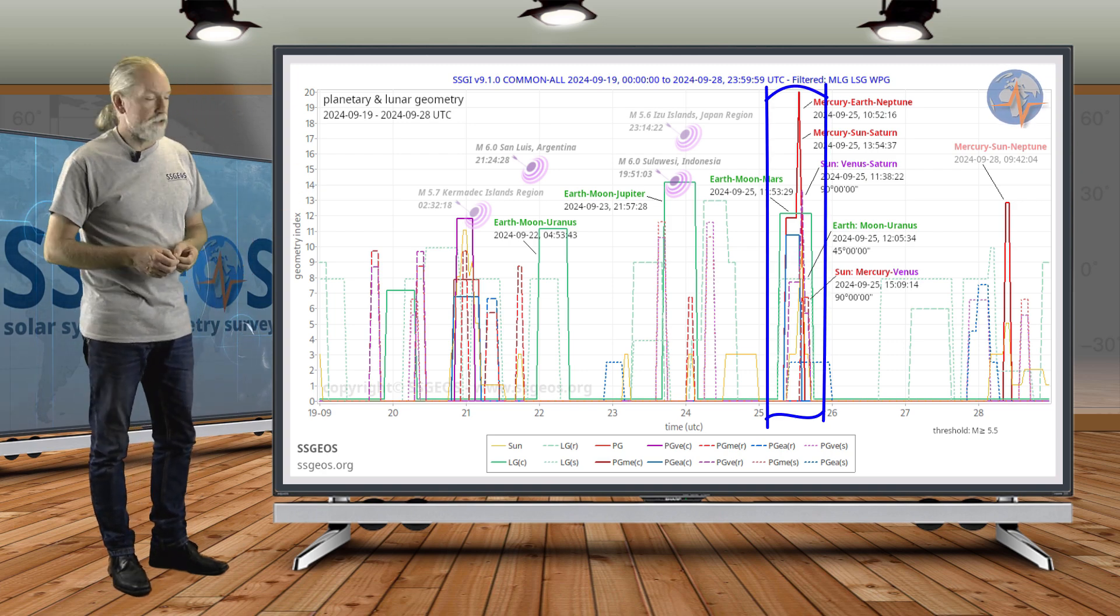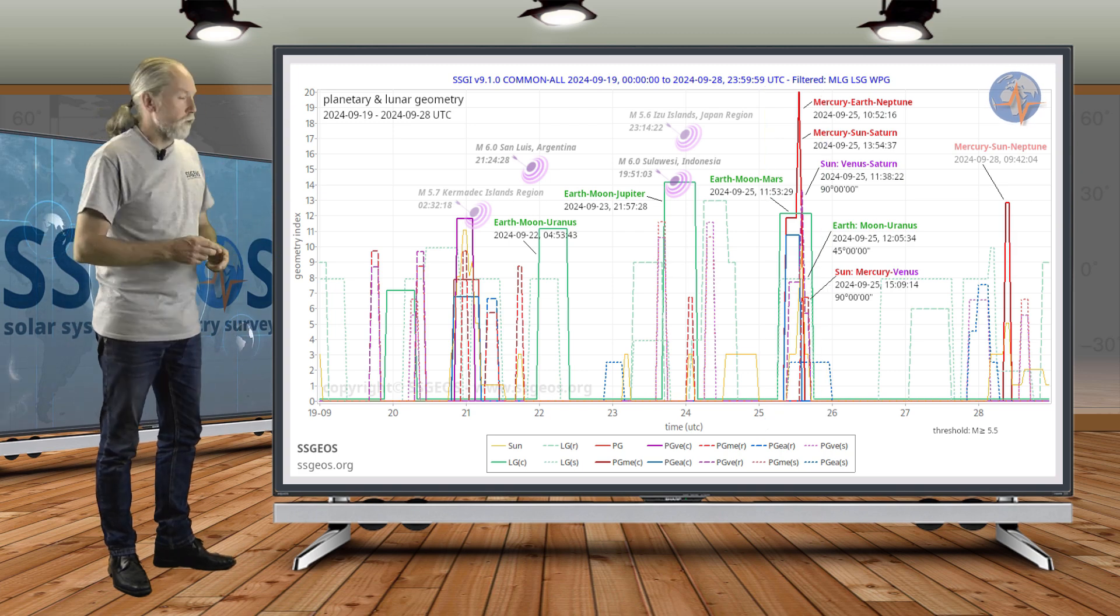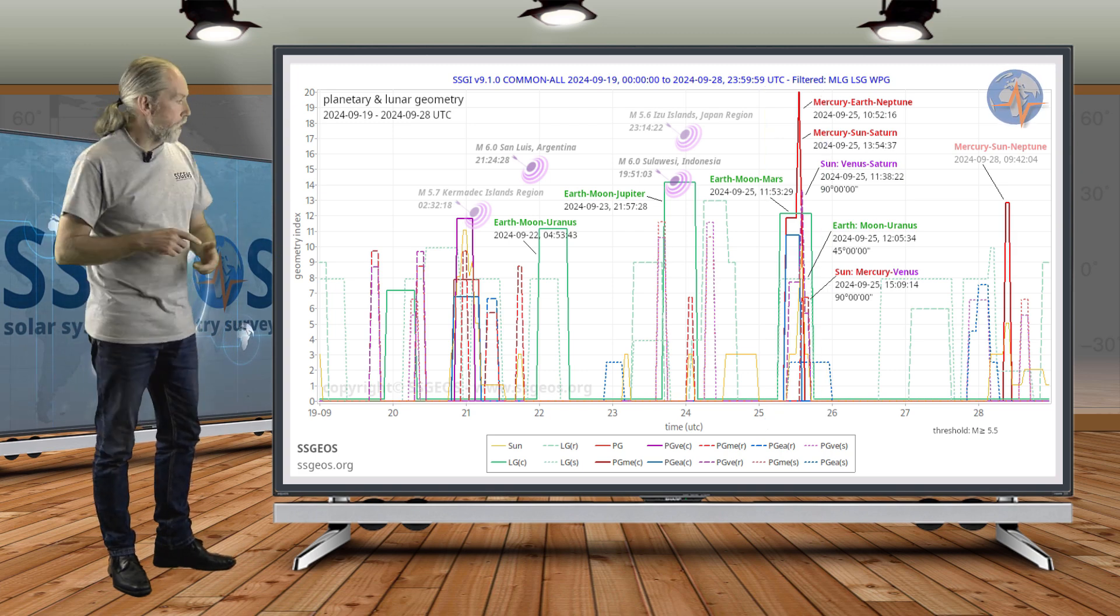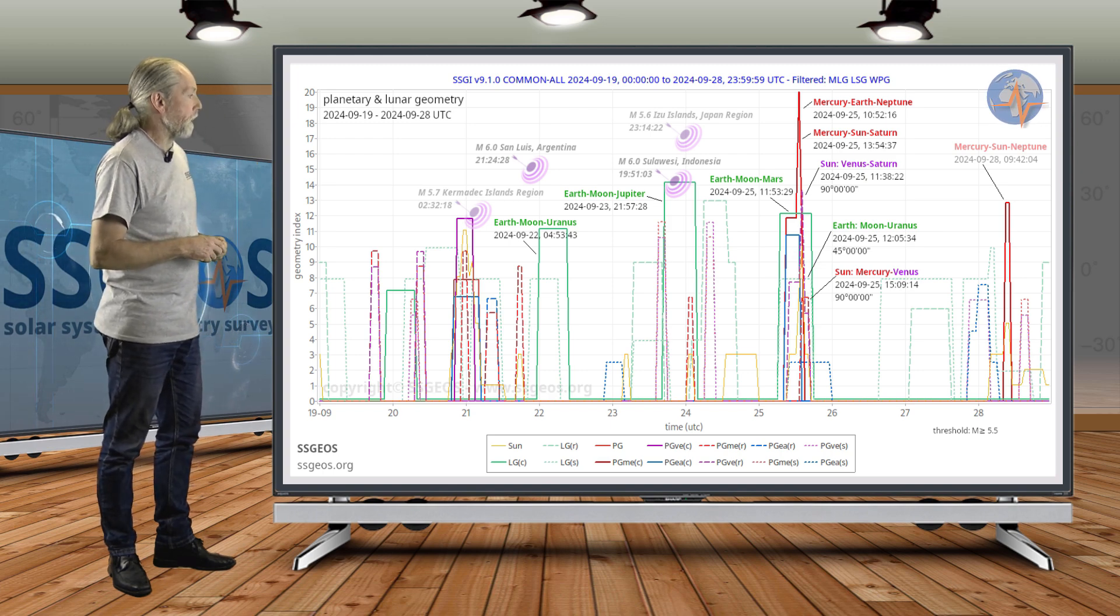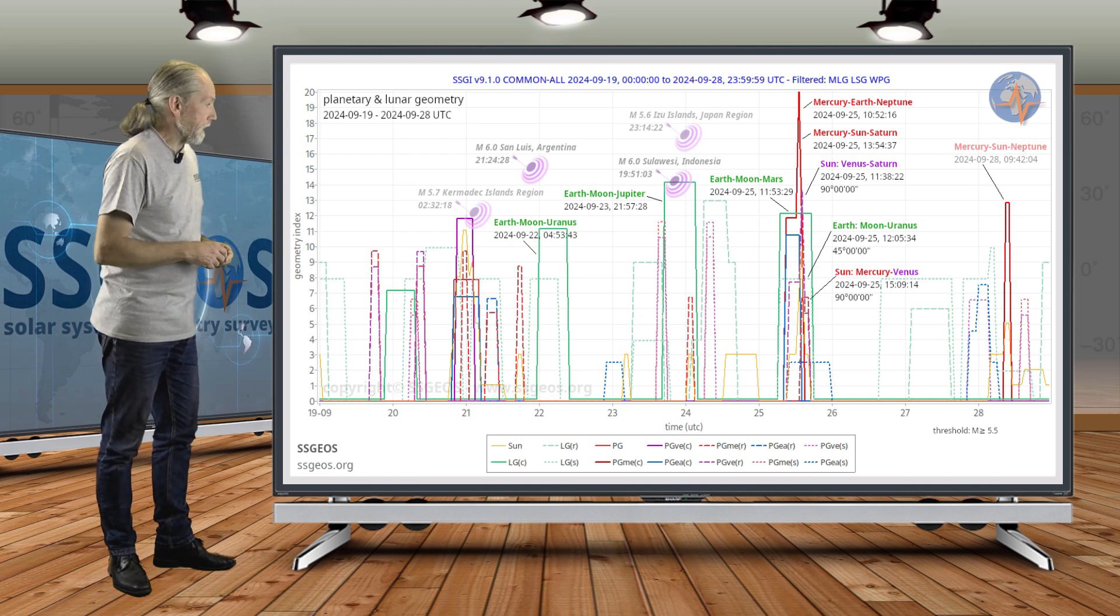That will converge with Sun-Venus-Saturn in a right angle, and also Sun-Mercury-Venus in a right angle. So Venus is involved in two right angle geometries and also the Sun.